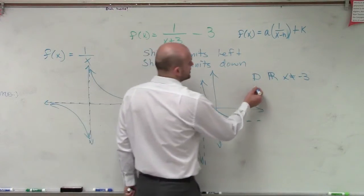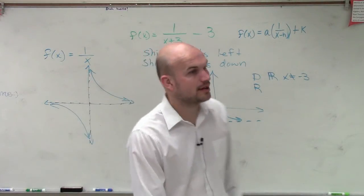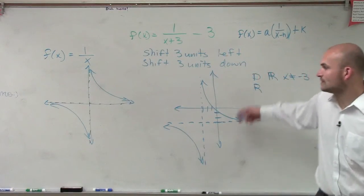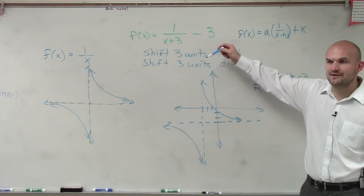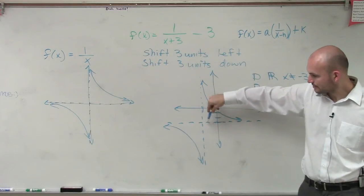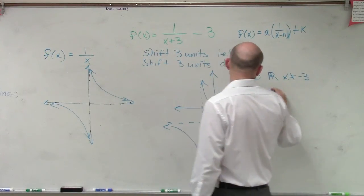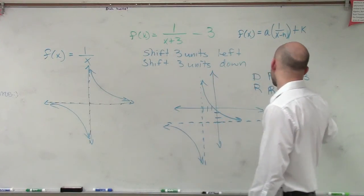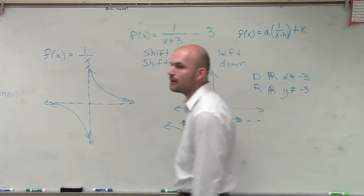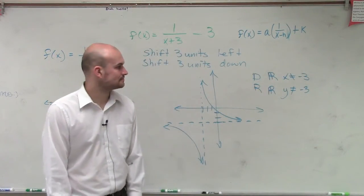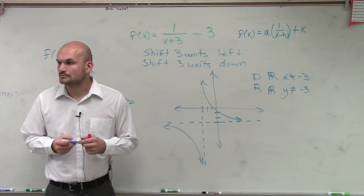Then when we look at the range, the range is going to be all real numbers, except what is the only output value or y value that my graph is not evaluated for? It would never have a point at y equals negative 3. So the range is all real numbers, except y cannot equal negative 3. And that's it. That's all you guys had to do for that type of equation.